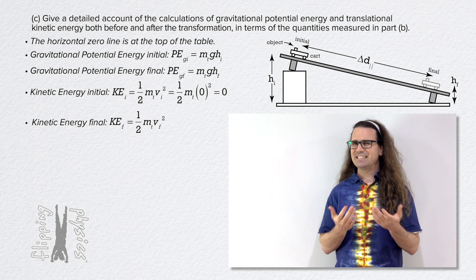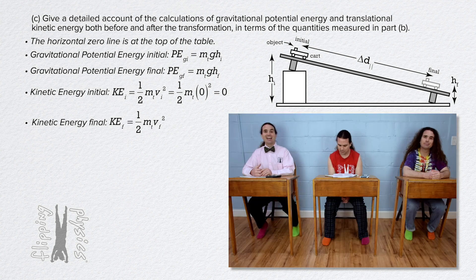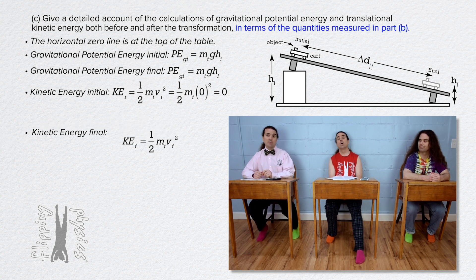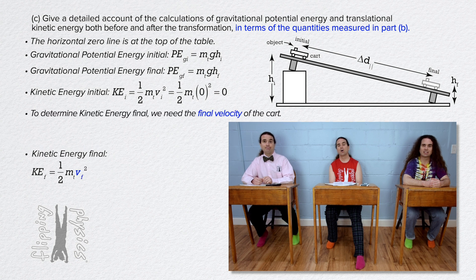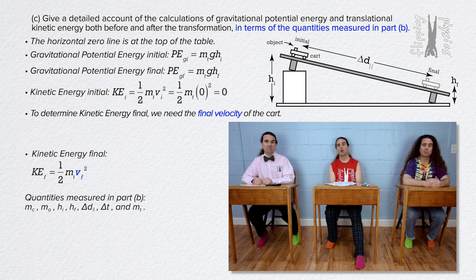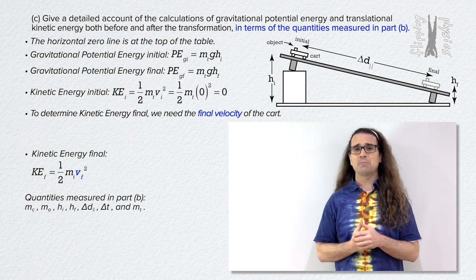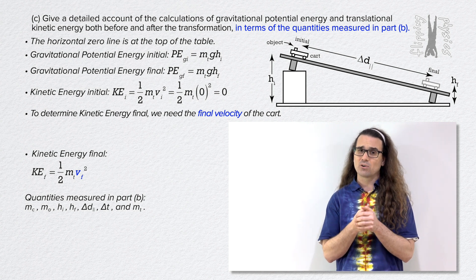Bobby reads Part C again: give a detailed account of the calculations in terms of the quantities measured in Part B. The equation for kinetic energy final is not in terms of the quantities measured in Part B — velocity final was not one of the quantities measured in Part B. That is tricky, but the question does say to read carefully and pay careful attention to what it is asking for.